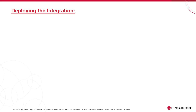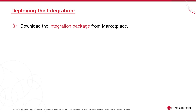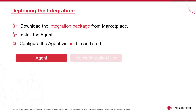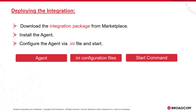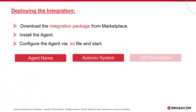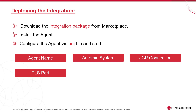The procedure to deploy the AWS Lambda integration is as follows. First, we download the integration package from Marketplace — this package contains all the necessary elements. We unzip it, which produces a directory containing the agent, the INI configuration files, and several other items like the start command. We use the appropriate INI file for our specific platform. AWS Lambda is a standard Atomic agent requiring at least four values to be updated: agent name, Atomic system, JCP connection and TLS port, and TLS certificate.